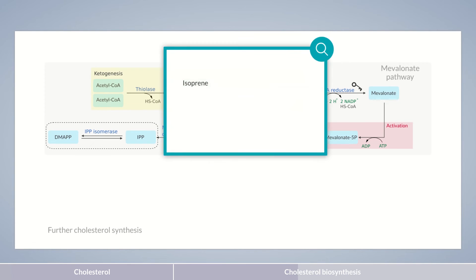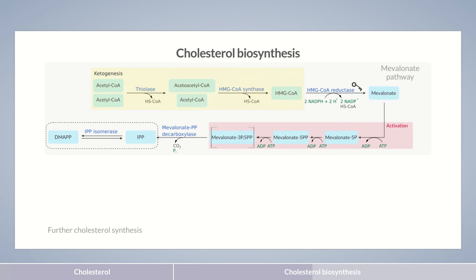This mixture can form isoprene, which has two double bonds, can polymerize easily, and forms a multitude of important natural substances known as terpenes. The most well-known terpenes are found in essential oils and plants. One of these is geraniol, which gives geraniums their fragrance. During cholesterol synthesis, geraniol is produced in its pyrophosphate form, geranyl pyrophosphate, in short GPP. It's formed by combining one unit each of IPP and DMAPP, cleaving off one of the pyrophosphate groups. The catalyzing enzyme is GPP synthase.